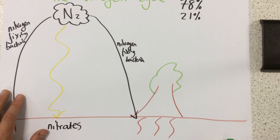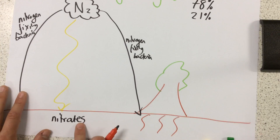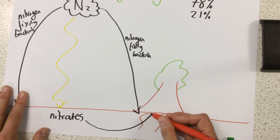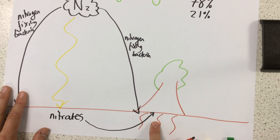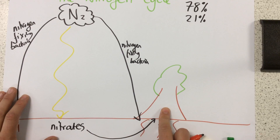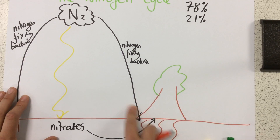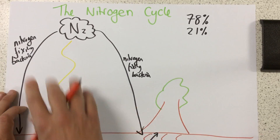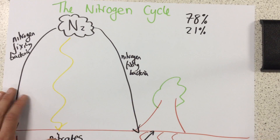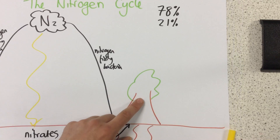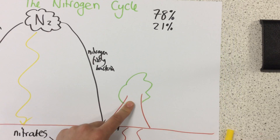These nitrates can be taken up by plants through the plant's roots, because nitrates help plants to grow. That's how nitrogen is moved from the atmosphere into plants. The whole cycle is just showing how nitrogen moves around. Now let's think about where it can go from the plant.